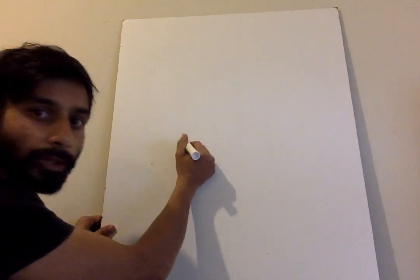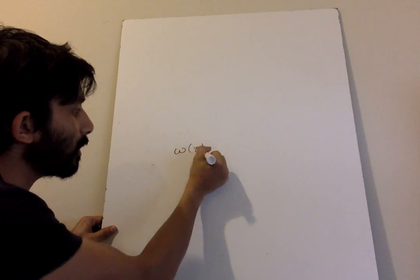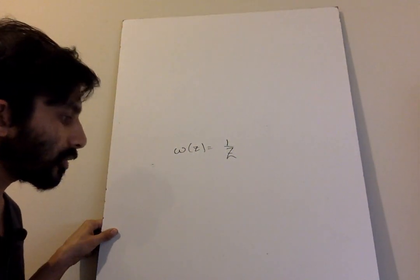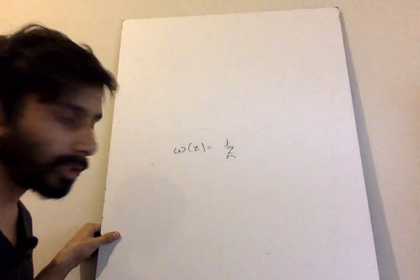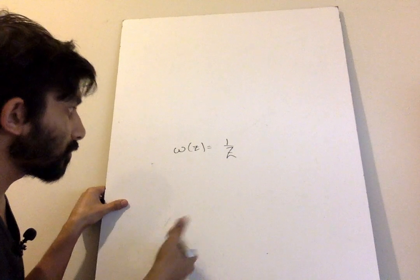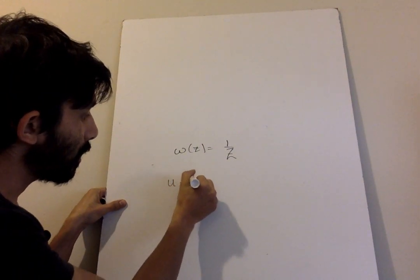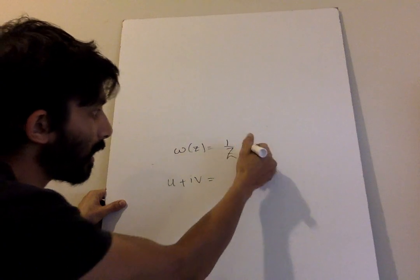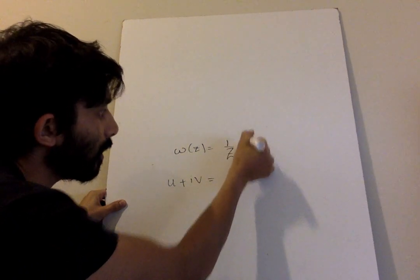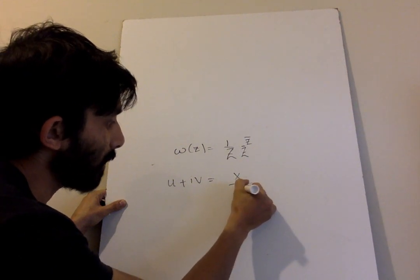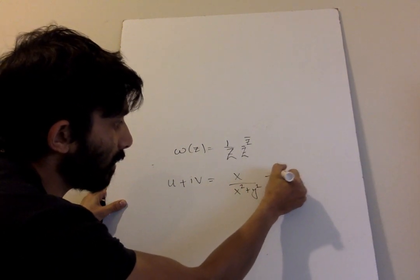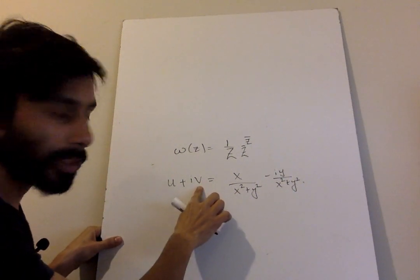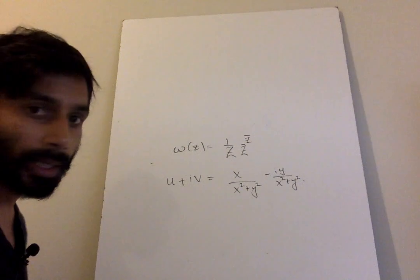So we have the function w(z) = 1/z, and to check for analyticity we need to appeal to the Cauchy-Riemann conditions. I'll put a link to the video where we've discussed those. The usual way of doing this for a function of this form is to find the real and imaginary parts. Multiplying and dividing by z-bar, we get an expression of the form x/(x²+y²) minus i·y/(x²+y²). So u = x/(x²+y²) and v = −y/(x²+y²).